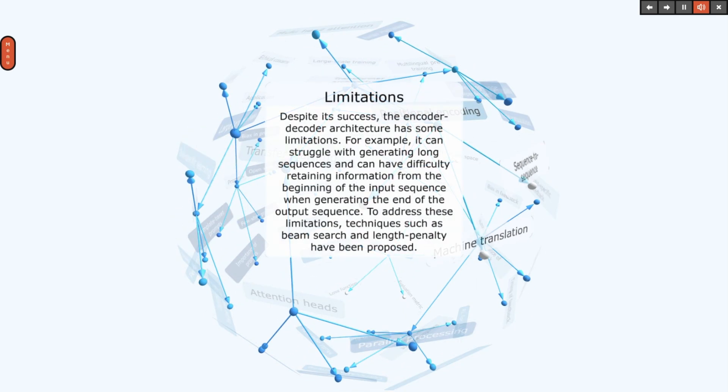Despite its success, the encoder-decoder architecture has some limitations. For example, it can struggle with generating long sequences and can have difficulty retaining information from the beginning of the input sequence when generating the end of the output sequence. To address these limitations, techniques such as beam search and length penalty have been proposed.